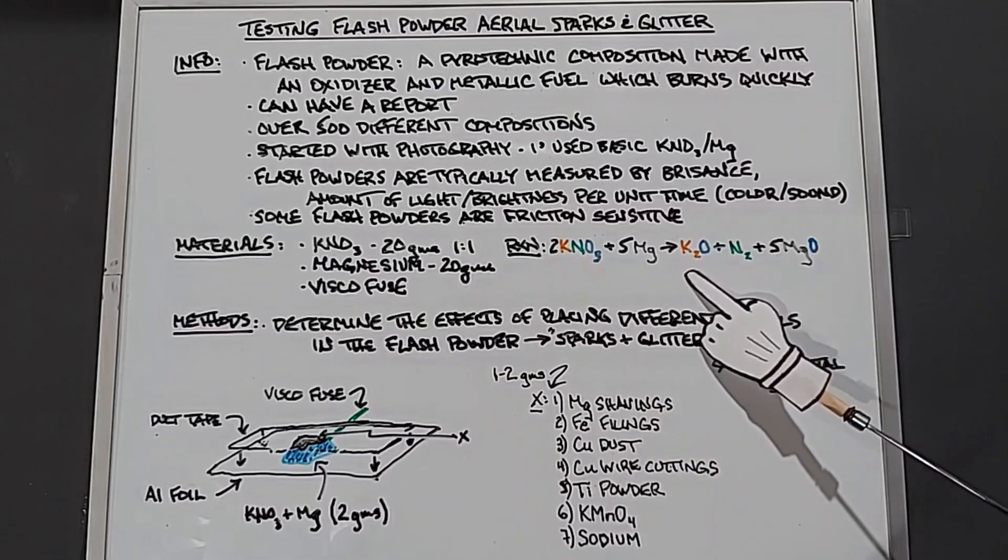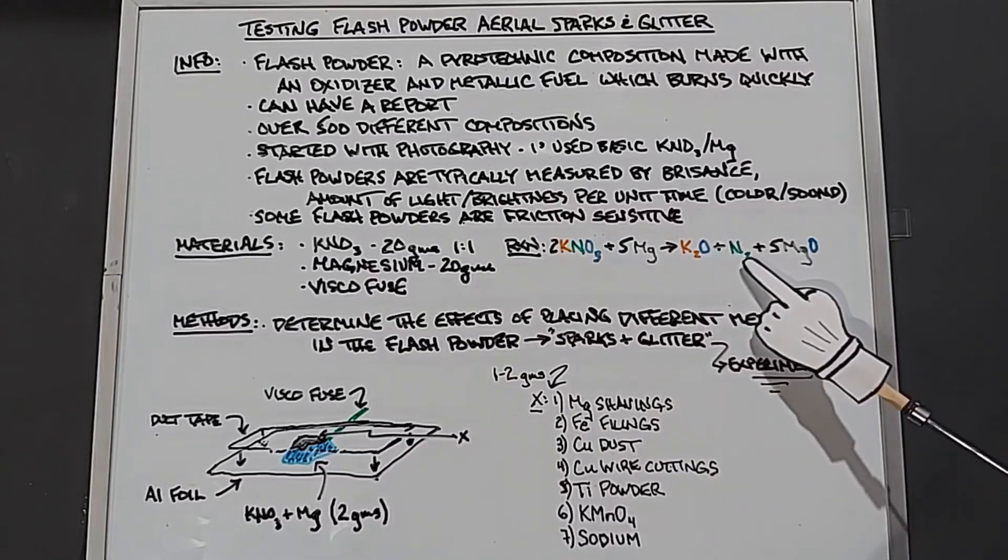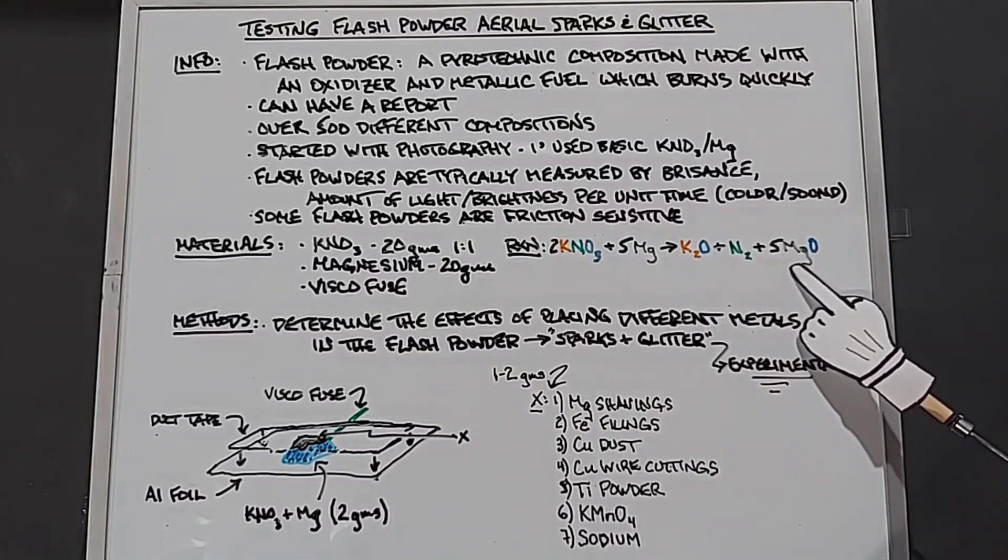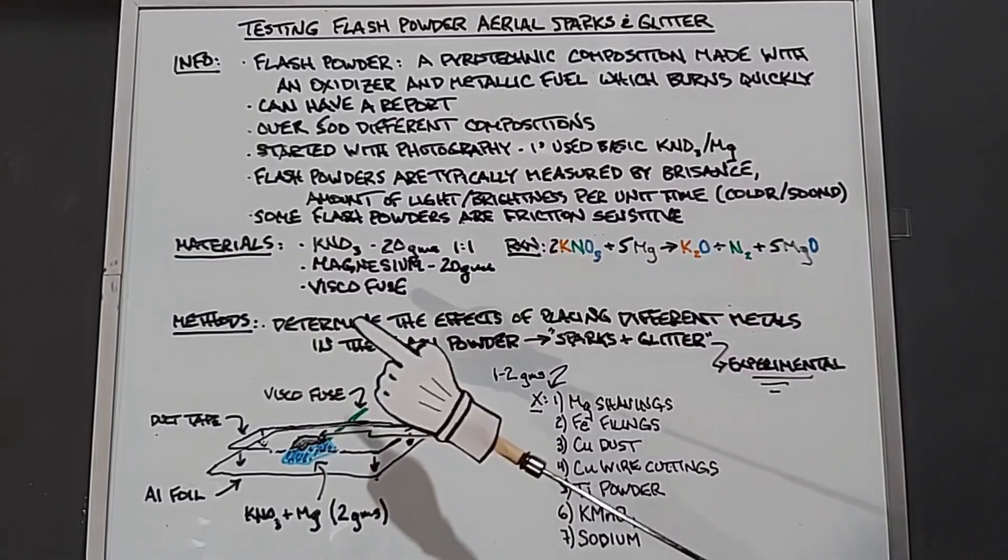To go over the reaction of this particular mix right here, it's 2 KNO3 (potassium nitrate) plus 5 magnesium yields K2O (potassium oxide) plus nitrogen gas plus 5 MgO (magnesium oxide).